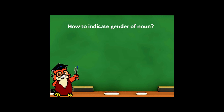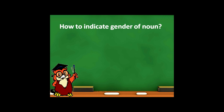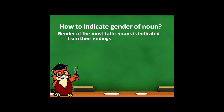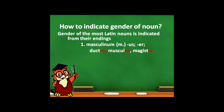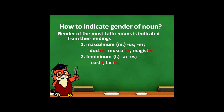You may ask: how do we indicate the gender of a noun? The gender of most Latin nouns is indicated from their endings. Masculine nouns have endings -us or -er: ductus, musculus, magister. Feminine nouns can have endings -a or -es: costa, facies.